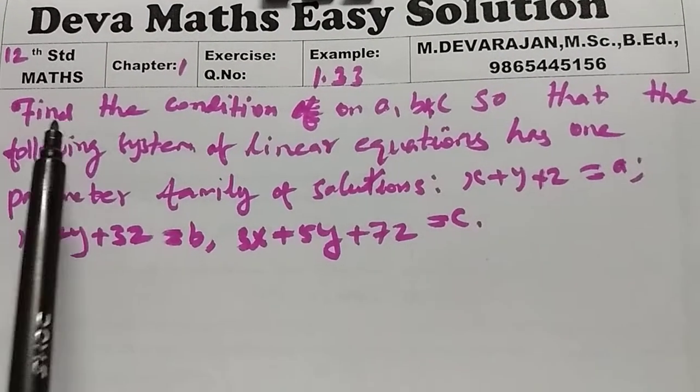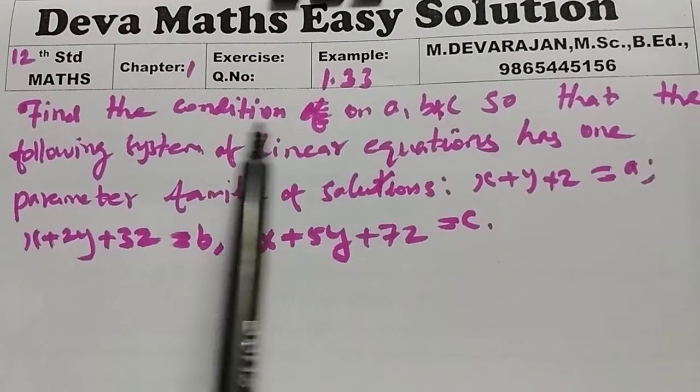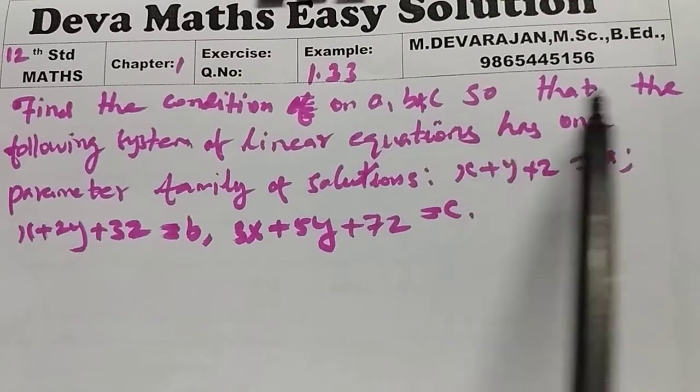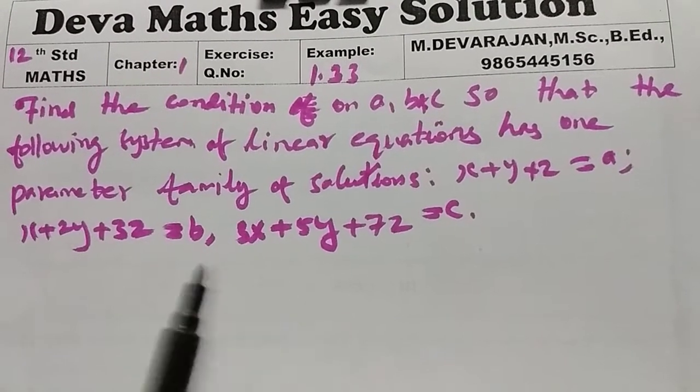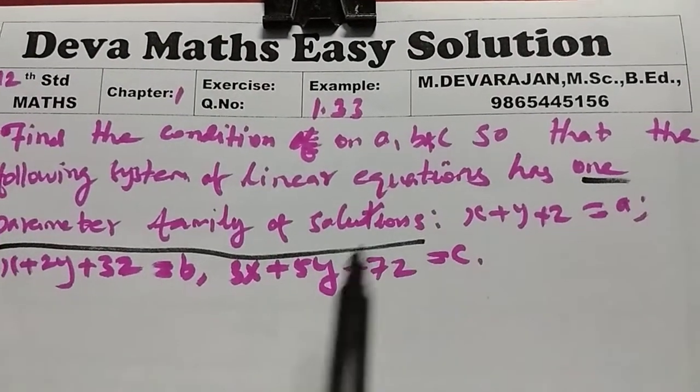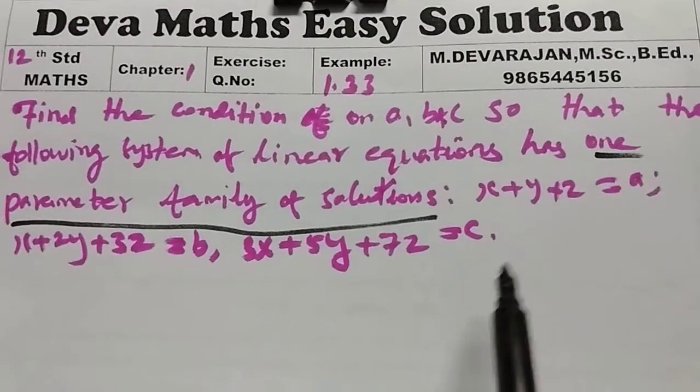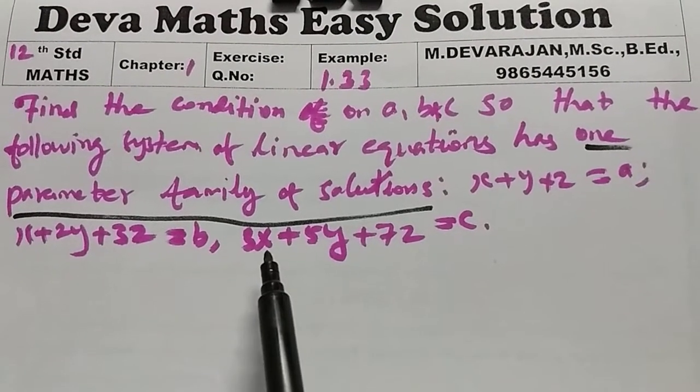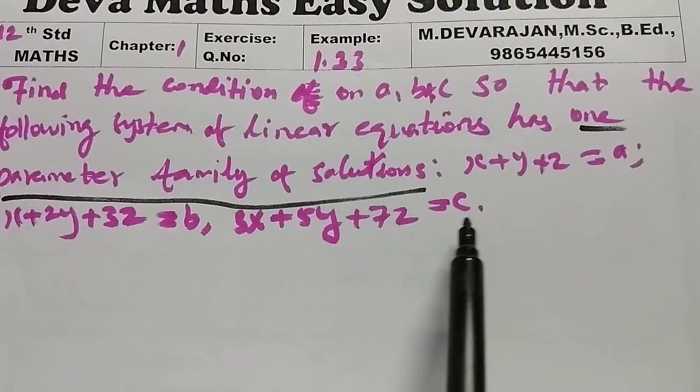The question is: find the condition on A, B, and C so that the following system of linear equations has one parameter family of solutions. The equations are x plus y plus z equals a, x plus 2y plus 3z equals b, and 3x plus 5y plus 7z equals c.